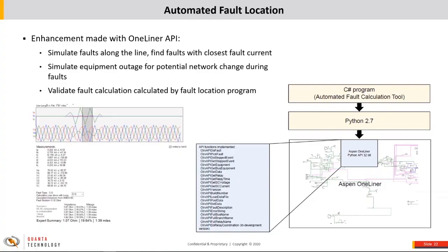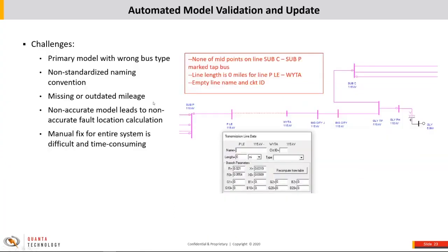This screenshot shows the proof of concept for the fault location program. It takes the recorded fault records, draws the curves on screen, gives all measurements, detects the fault type, and comes up with a fault impedance calculation and mileage. If the mileage exists in one-liner, it maps it. The program calls the API functions through Python.